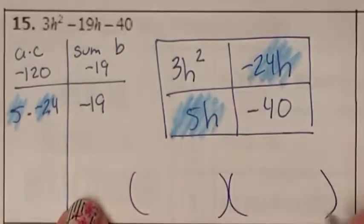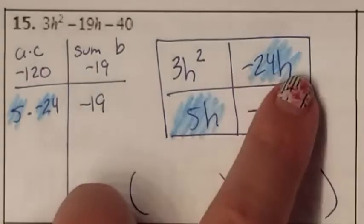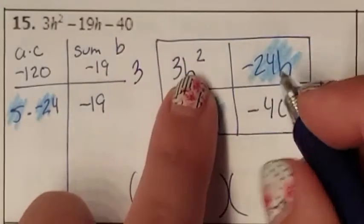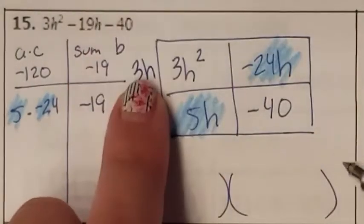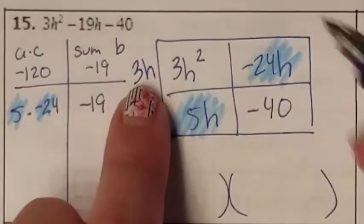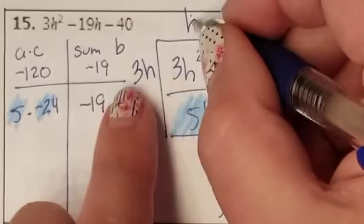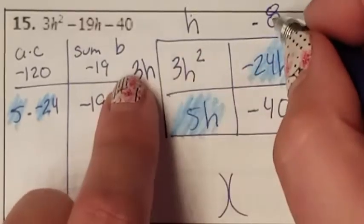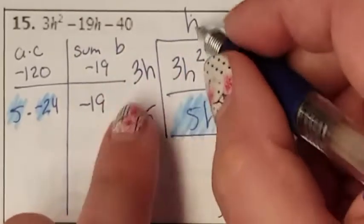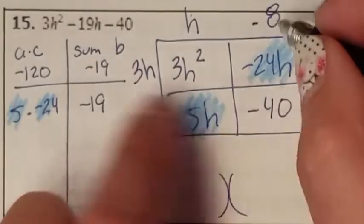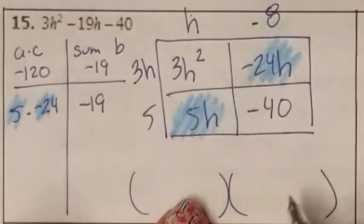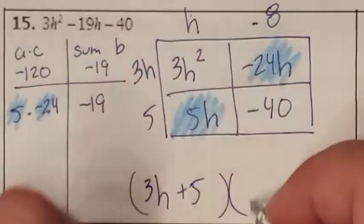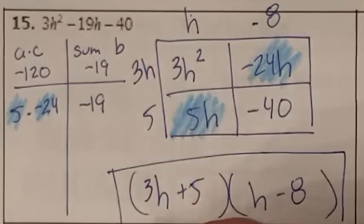To find my parentheses, I find the sides — just look at the top row. 3 and negative 24 have a GCF of 3; H squared and H have a GCF of H, so the side GCF is 3H. Then I multiply to find the rest: 3H times H gives 3H squared; 3H times negative 8 gives negative 24H; H times 5 gives 5H; and 5 times negative 8 is negative 40. I found my sides, so I know my parentheses: 3H plus 5 and H minus 8. Those are my parentheses and I am done.